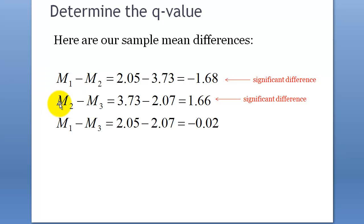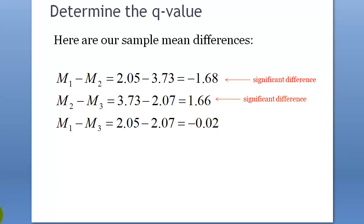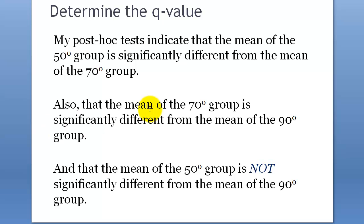Groups 1 and 2 are significantly different. For groups 2 and 3, the difference is 1.66, so it's also significantly different. For groups 1 and 3, the difference is 0.02, which is smaller than 0.45 — so that difference is not significant.